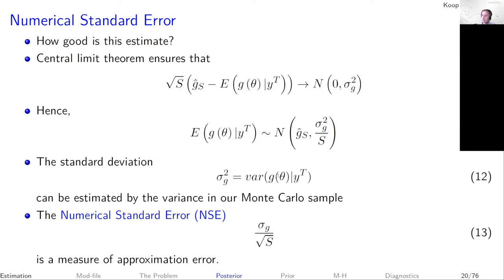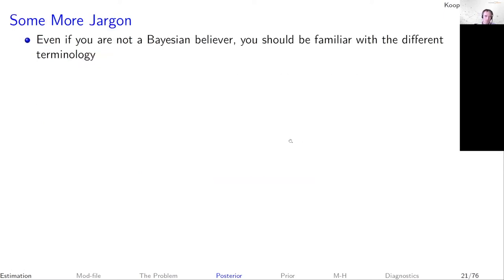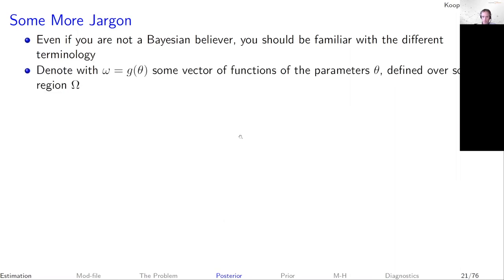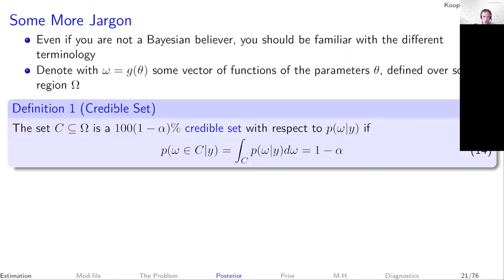Even without being a Bayesian believer, you should know some terminology. The first is the credible set: a range for the parameters — or some function of the parameters — that covers a certain percentage of the posterior probability mass. For example, a 90% credible set means there is 90% posterior probability that the parameter lies within that range.